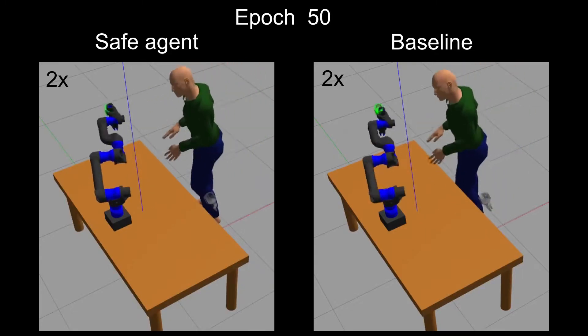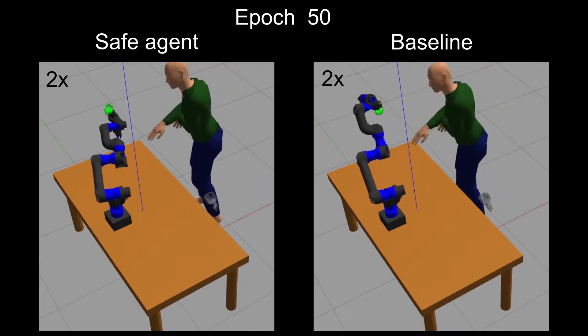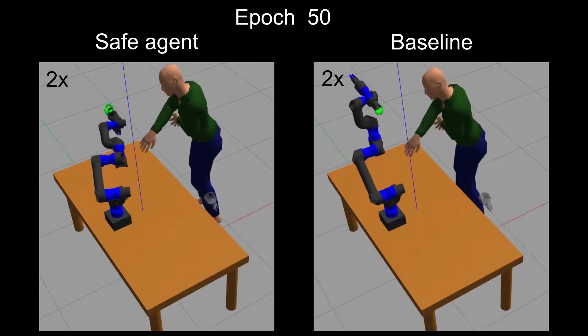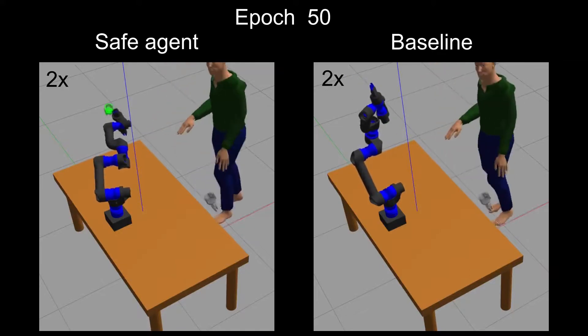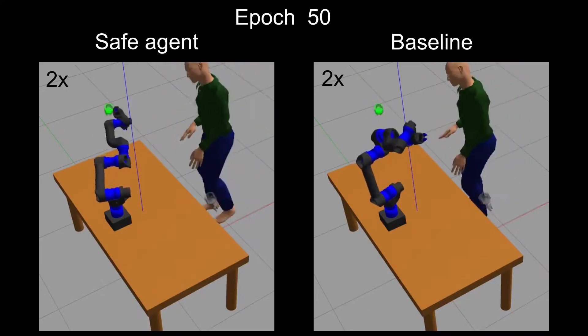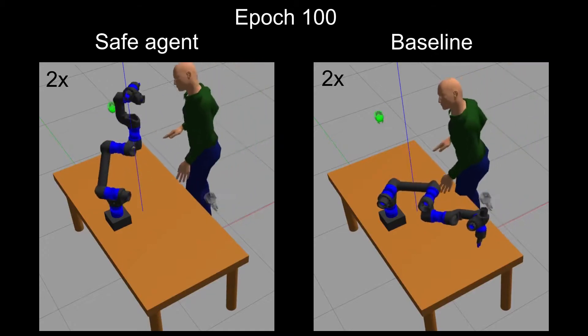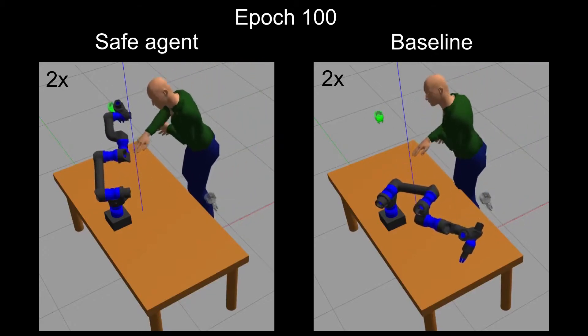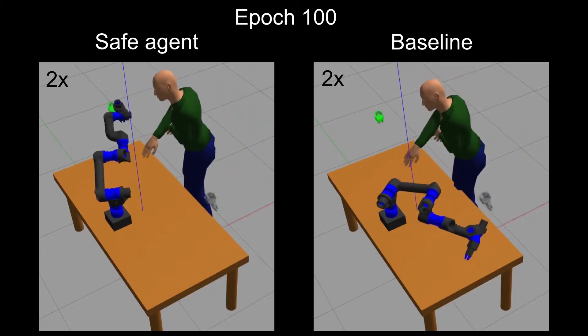By epoch 50, the safe agent learned its first evading maneuver. Around epoch 100, the baseline moves away from the human and therefore never comes close to the goal anymore.